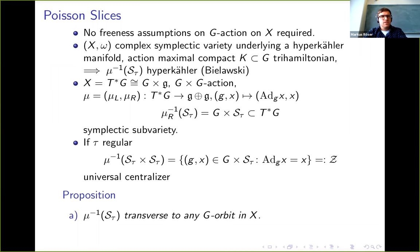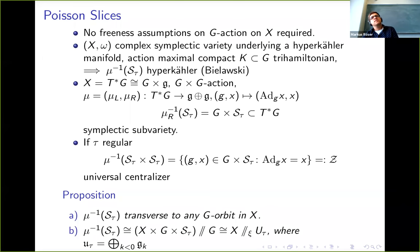Let me list two more properties of these Poisson slices. It turns out that this slice is a slice in the sense that it's transverse to any G orbit in X that it meets. We can also realize it via Hamiltonian reduction. The double slash denotes Hamiltonian reduction. In some sense G×S is a kind of universal object for this construction in the sense that we can obtain the Poisson slice by taking Hamiltonian reduction of the product of X with G×S and reducing by the diagonal G action.